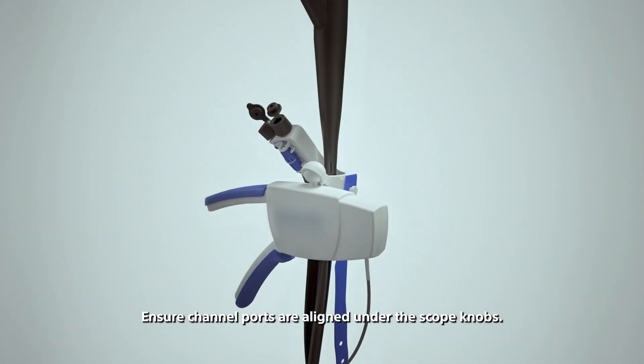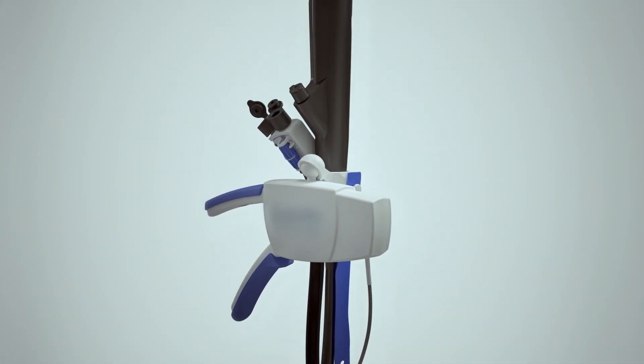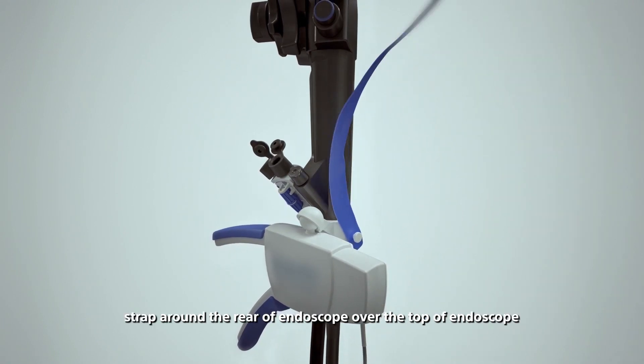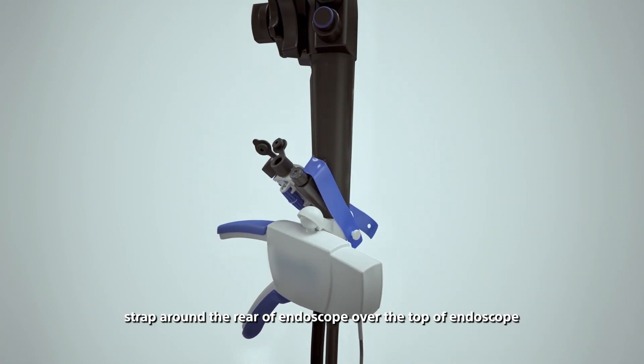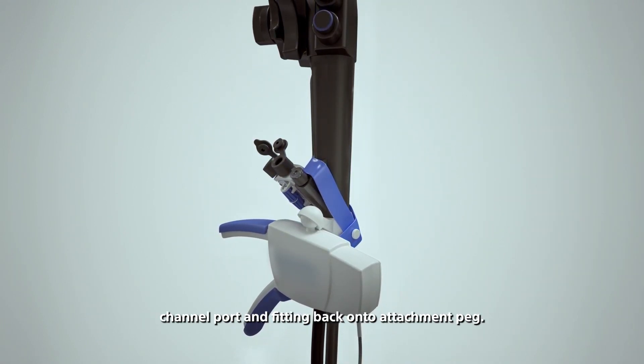Ensure channel ports are aligned under the scope knobs. Secure by stretching the blue rubber handle strap around the rear of endoscope, over the top of endoscope channel port, and fitting back onto attachment peg. Close the handle.